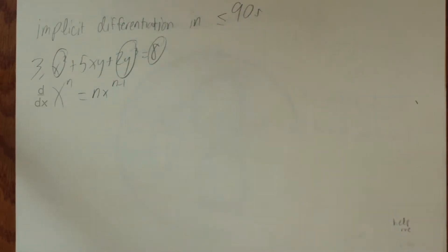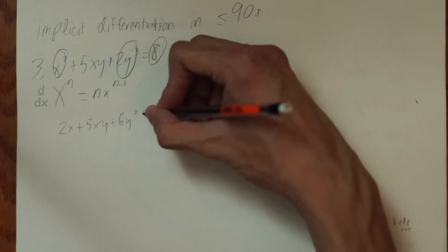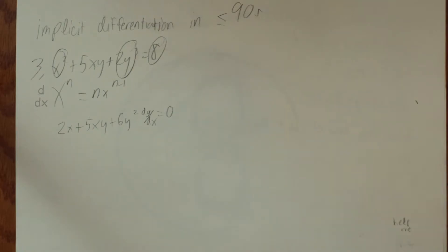This would make the terms x squared and 2y cubed become 2x and 6y squared dy over dx respectively. The dy over dx is there because when performing implicit differentiation, when you take the derivative of a y term, you must have a dy over dx after it.